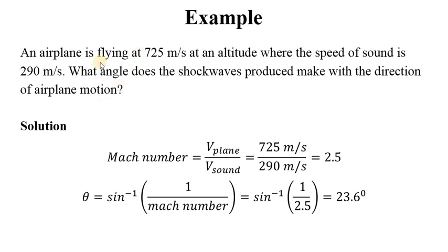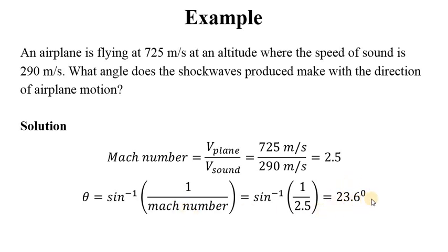Now that we have the velocity of the body and the velocity of sound in that environment, we can easily get the Mach number. Mach number equals velocity of the plane over velocity of sound, giving us 2.5. To find the angle asked in this question, we take sine inverse of 1 over Mach number, giving an approximate angle of 23.6 degrees.